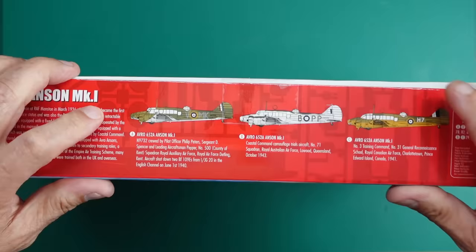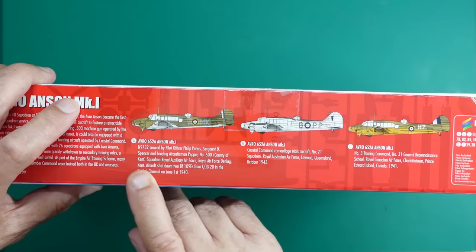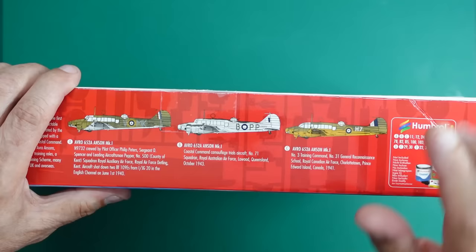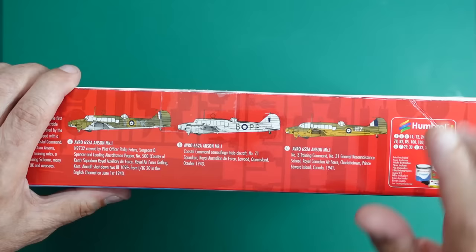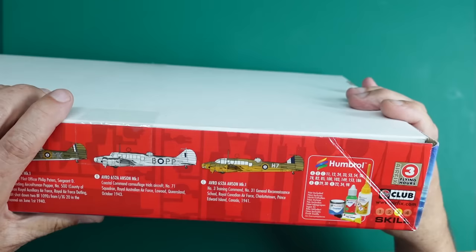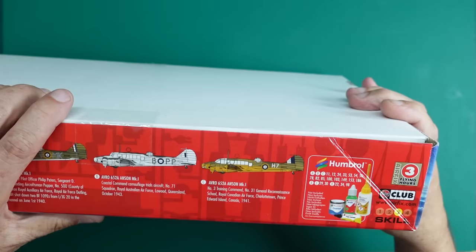Then we've got version one which is 652 Squadron N9732 of the Royal Air Force Detling Kent. Aircraft shot down two BF-109Es from JG-20 in the English Channel on the 1st of June 1940. Coastal Command version. This is the one that Jason over at Model Kit Stuff did, it looks bloody gorgeous. Royal Australian Air Force Queensland October 1943, and then we've got one here with the high speed sports car windscreen. You can see the difference there on the canopy. I would always go for that one, I think it looks better.